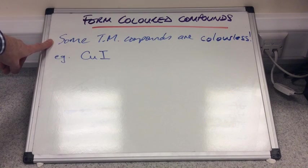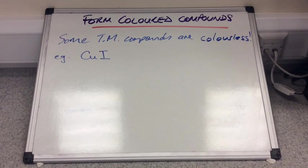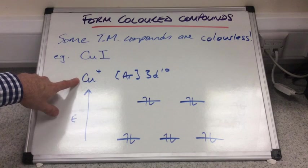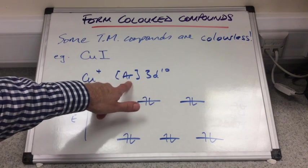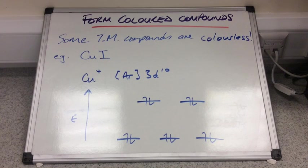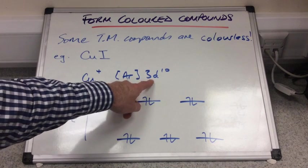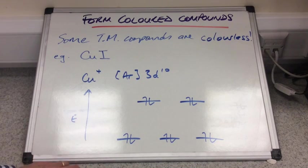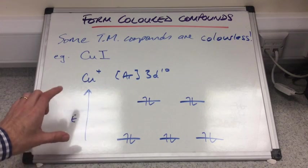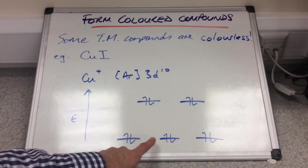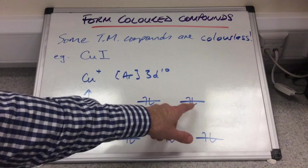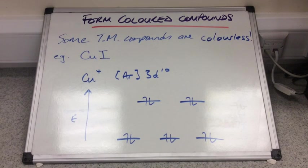Some transition metal compounds are actually colourless — for example, copper(I) iodide, CuI. The Cu⁺ ion has an electronic configuration of [Ar]3d¹⁰. Although the ligands attach and there is an energy splitting, all the 3d orbitals are completely full, so there is nowhere for an electron to be promoted to. It doesn't absorb any part of white light, so all components of white light pass through, and we see the result as colourless.